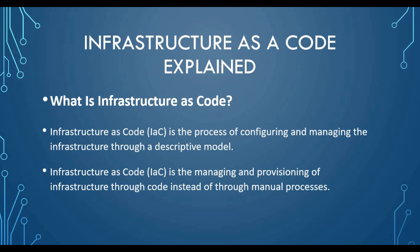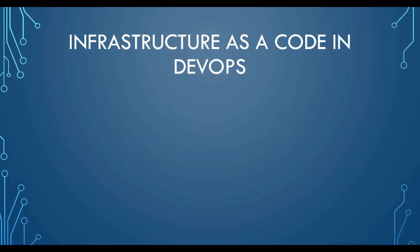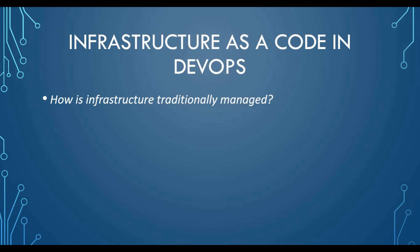To understand infrastructure as code in DevOps, you need to understand how infrastructure was traditionally managed. A couple of years back — maybe ten years back — we had a lot of physical servers. You'd install applications, add memory manually, and if you needed a new server you'd order from a vendor, which could take months. That's how traditional infrastructure was managed.